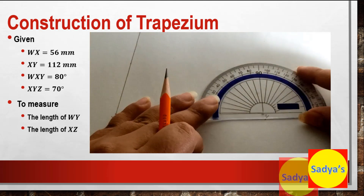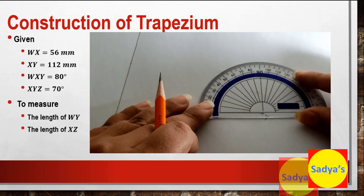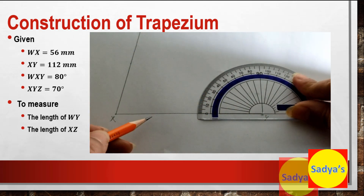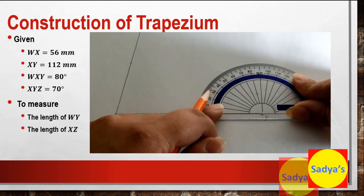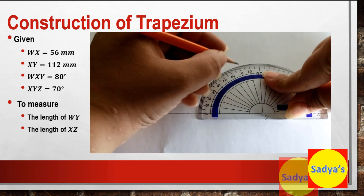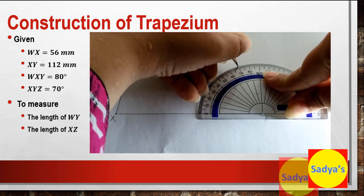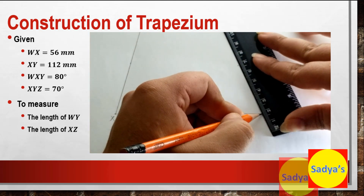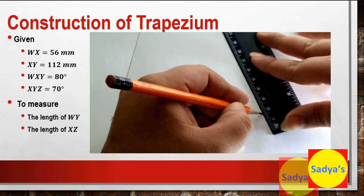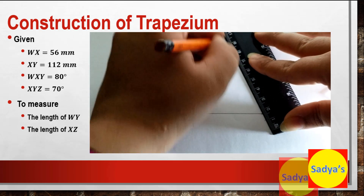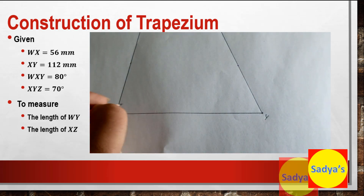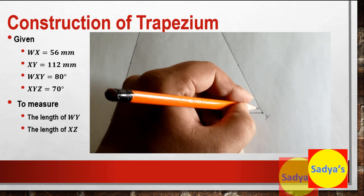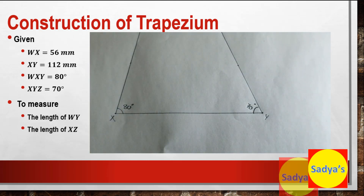Now they have given us angle Y to be 70 degrees. Place the protractor such that the center is at point Y. Since the line is towards the left side of the center, we'll start measuring from this 0, and 70 degrees would be here. Mark 70 degrees and then join Y with this point and extend the line. We are done with angle X which is 80 degrees and angle Y which is 70 degrees.